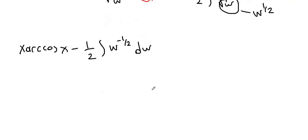Now we can apply the power rule. So w to the negative one half, we add one, and divide by the power. Negative one half plus two over two. So here we obtain w to the one half divided by one half.